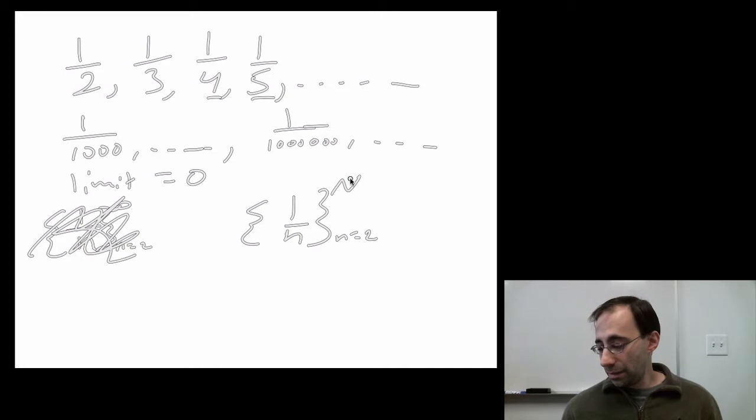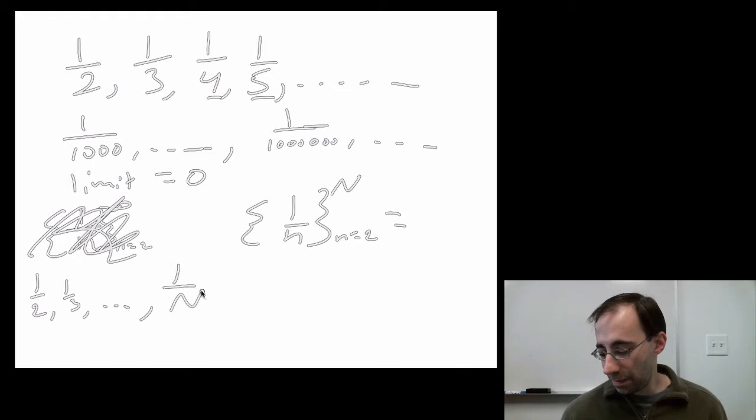We'll get rid of this and call it one over n from n equals two to capital N. What does that mean? That means you get one half, one third, dot dot dot, all the way up to one over big N. A limit, in this case, is the same thing as taking this big N over here and making it bigger and bigger and bigger until it hits infinity.